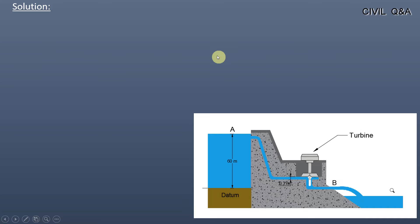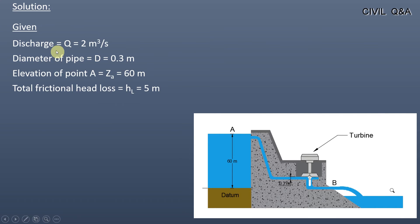First we will see what we have been given in the question. Discharge Q is equal to 2 meter cube per second. Diameter of pipe D is equal to 0.3 meter. Elevation of point A, Za, is equal to 60 meters. And the total frictional head loss through the system, hL, is equal to 5 meters.